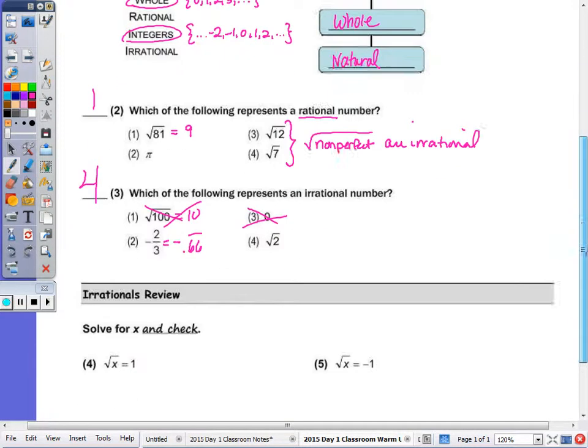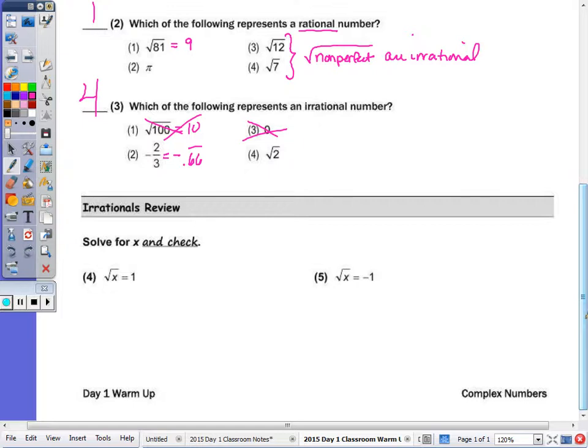To review our last unit right before break, I wanted you to solve for x and check. And to get rid of our radical symbol, we square both sides. We end up with x equals one, as one times one is one, or one squared.